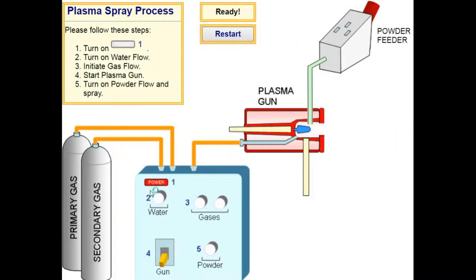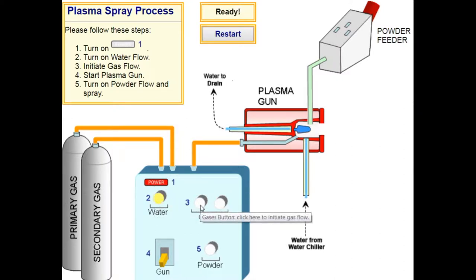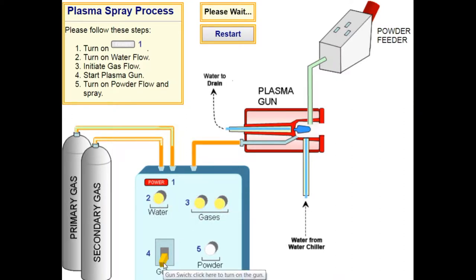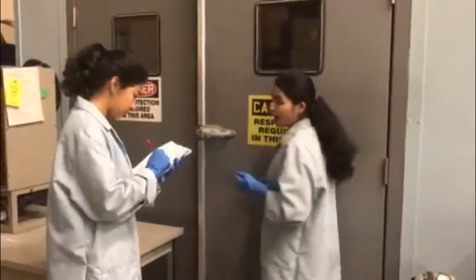Plasma formation consists of localized ionization produced by a high voltage, forming a DC arc between an anode and a cathode. This allows it to produce a plasma flame with extremely high temperatures and high speeds of 800 meters per second.